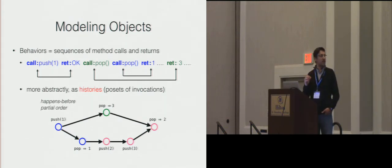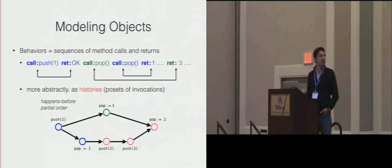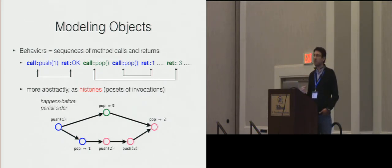In general, two invocations are related by this happens-before relation if one finishes before another one starts. You can see that in this example I have a history that includes some of the operations in the sequence above. The blue operations are ordered since one returned before the other one was called, and also two invocations of pop — the blue and the green one — are unordered since they overlap in time.